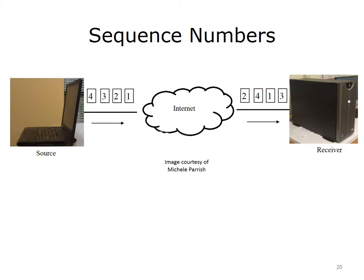TCP also uses sequence numbers. When data is passed to the transport layer from the session layer, the transport layer divides the data into chunks called segments. Each segment is given a sequence number. The initial sequence number is a randomly assigned number. When the segments are sent to the destination device, they may take different paths and arrive in a different order than the order in which they were sent. The sequence numbers are used by the receiving device's transport layer to reassemble the segments back into the correct order before they are passed back up to the session layer. The client sent four segments, but when they arrived at the server, they are no longer in order. The server's transport layer will use the sequence numbers to put the segments back into the correct order before passing them to the session layer.